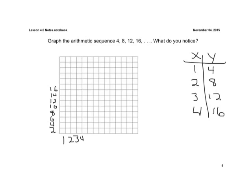Let's go ahead and graph these. So the ordered pair 1, 4. 1, 4, plot a point. 2, 8, plot a point. 3, 12, plot a point. And 4, 16.